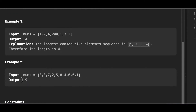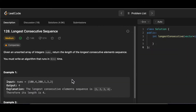Looking at the next array, we have many elements. What is the longest consecutive? The length is 9. If we start from 0 — 0, 1, 2, 3, 4, 5, 6, 7, 8 — that's it. We have 9 elements starting from 0 to 8. Although they are scattered and the order is not maintained, the sequence is still consecutive. That is what we have to find and return the length of.